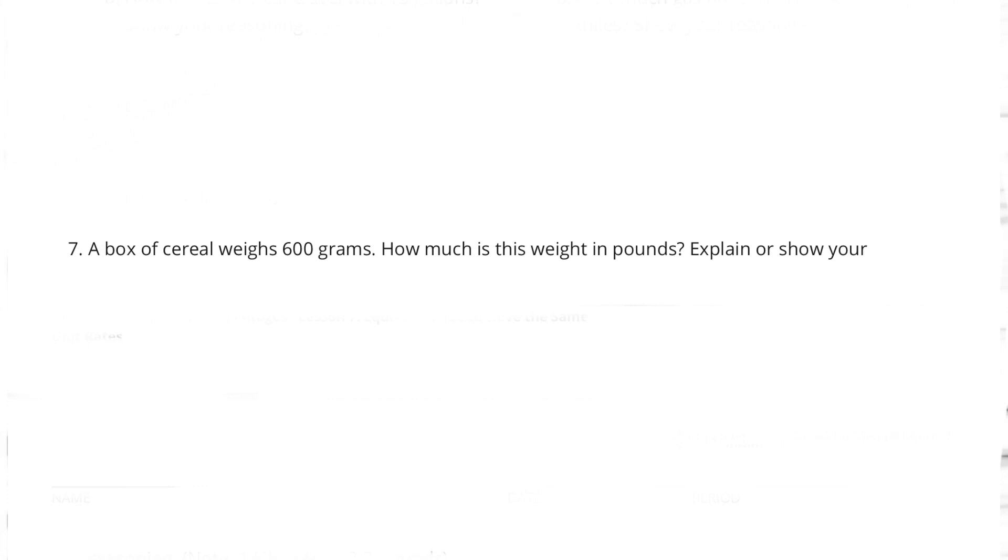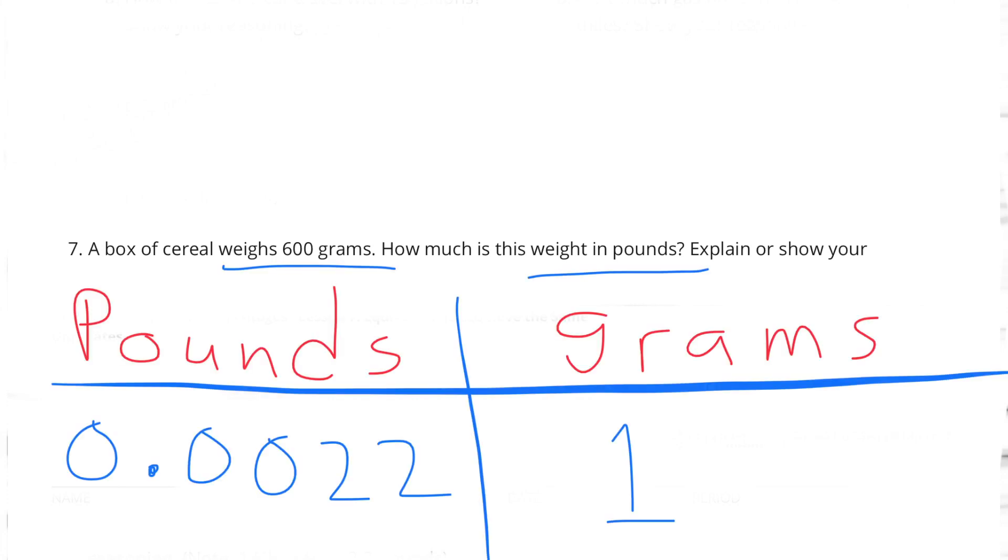Number seven from unit 3 lesson 7: A box of cereal weighs 600 grams. How much is this weight in pounds? I looked it up and found out that one gram equaled 0.0022 pounds.